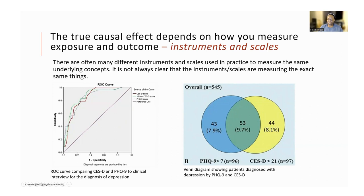The second picture on the right is a Venn diagram showing the overlap between patients diagnosed with depression by two scales measuring the same outcome — the PHQ-9 (blue) and the CESD-10 (yellow). Although they produce similar estimates of depression — PHQ-9 says 7.9% and CESD says 8.1% — there are some patients diagnosed as depressed by the PHQ-9 that are missed by the CESD. This has implications for our data synthesis models: can we say for sure that these two instruments are estimating the same causal effect if we have primary studies that use both scales in our meta-analysis?